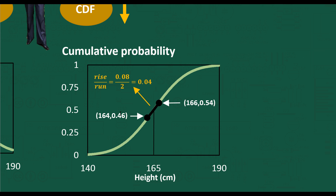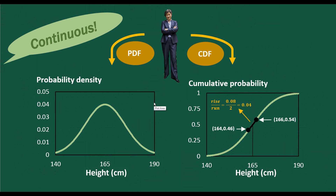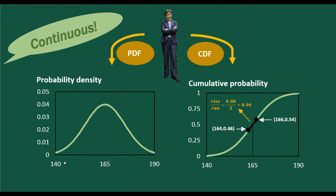The rise between those two points is about 0.08 — calculated using Excel's statistical functions — and the run is 2, giving a gradient of approximately 0.04. Looking at the PDF, the value at 165 is indeed 0.04. So the probability density values represent the gradient of the CDF. The gradient peaks in the middle of the CDF, and is smaller toward 180 or 190 centimeters, which is reflected in the PDF — the crest at 165 centimeters tells us the gradient is maximized there.